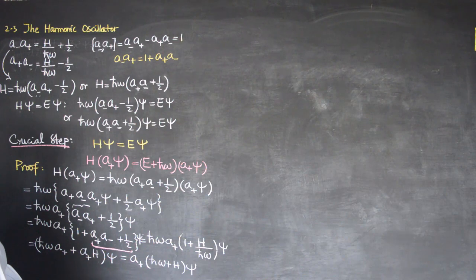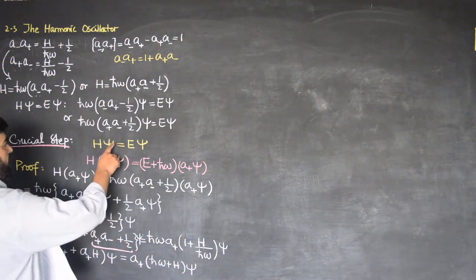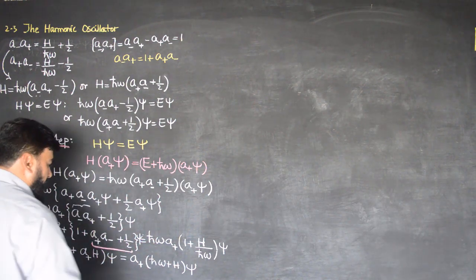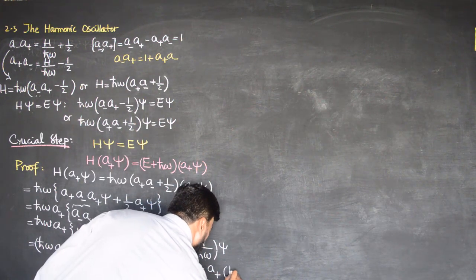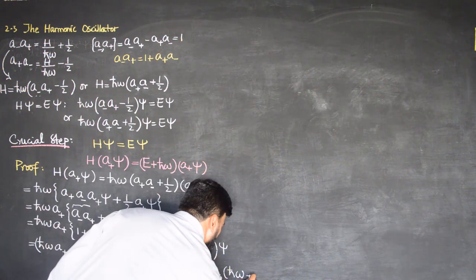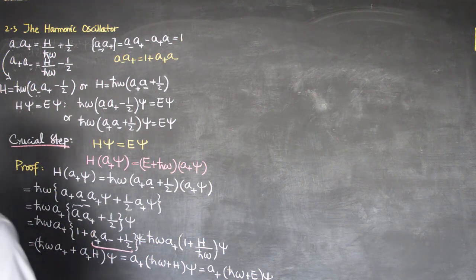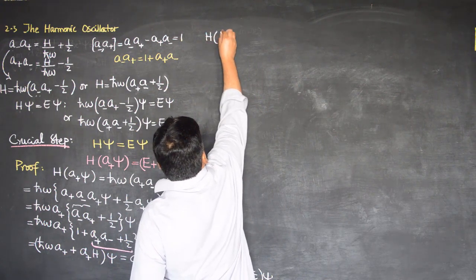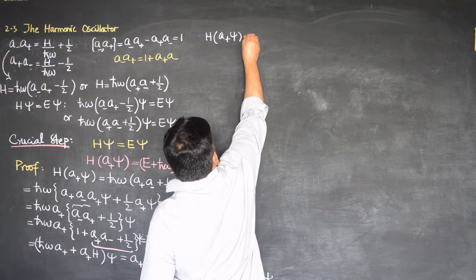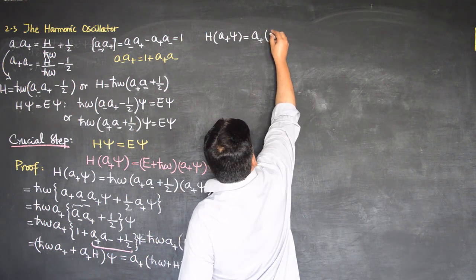We have ħω plus H, then psi. Now ħω plus H — I know that when ħω multiplies with this it will be ħω, but when H applies on psi it will give Eψ. So I can write that this is a+ and when they apply on it: ħω and when H applies on this it will give E and ψ. Now both are actually numbers so I can write H a+, then ħω, then psi.